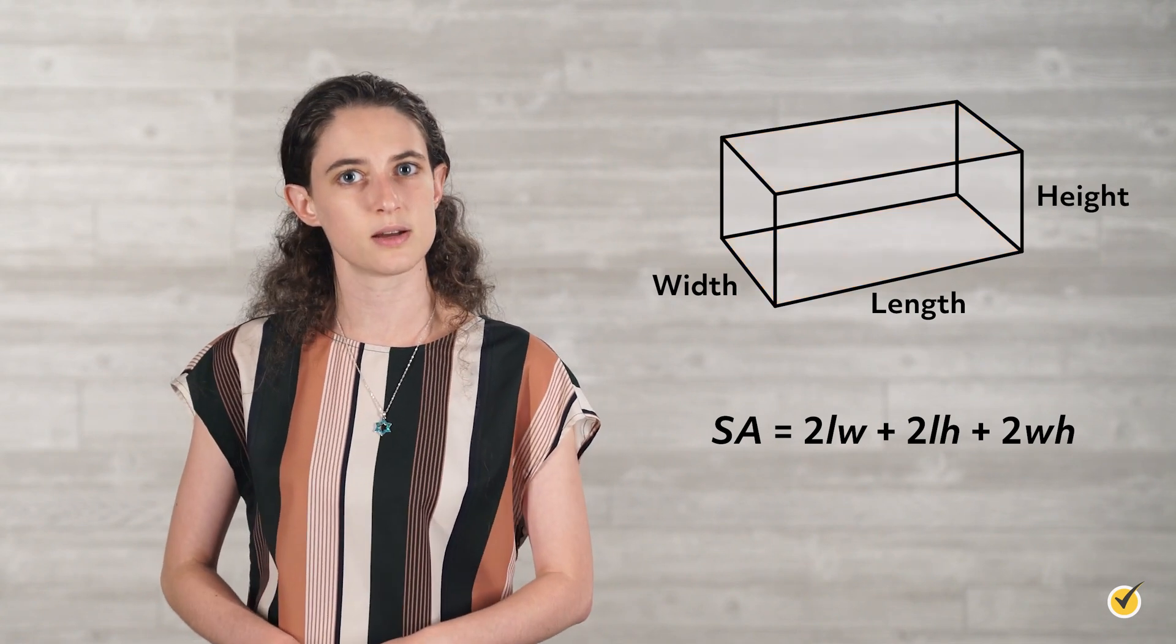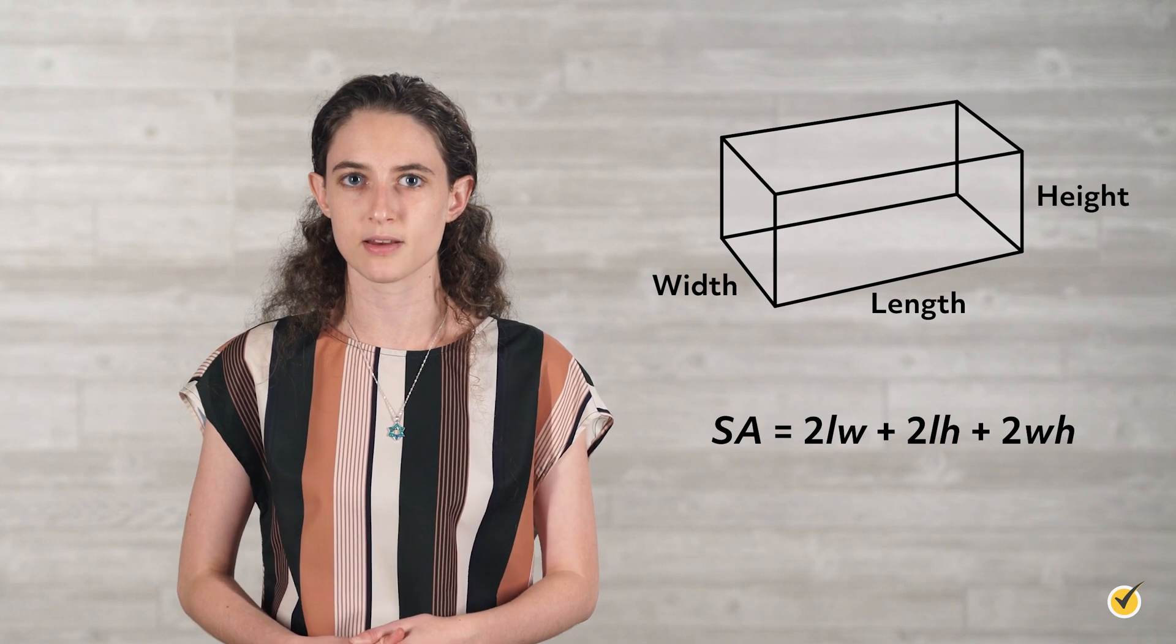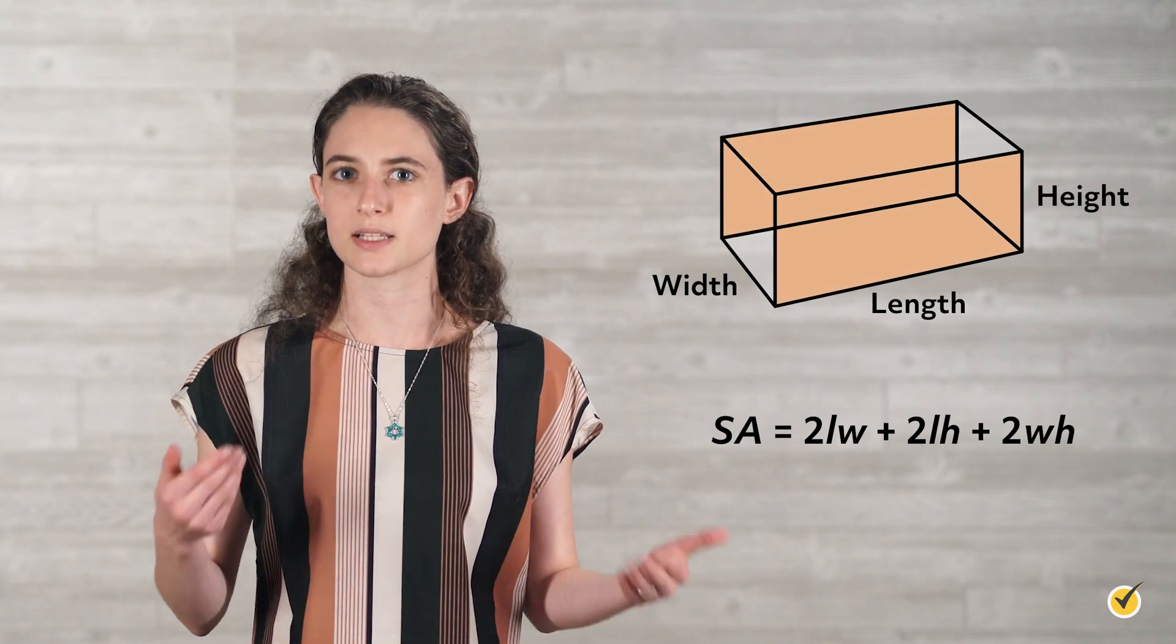The middle term, 2 times length times height, is double the length times the height. In other words, the front and back sides of the prism.